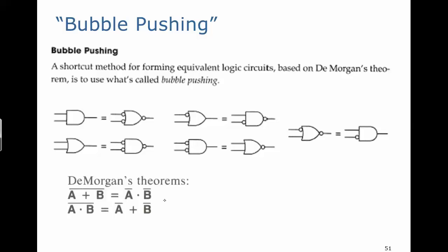What we're going to do is focus your attention down here to the two forms of DeMorgan's theorems, and let's draw the circuit on the left. We have the inverse of the sum, so that is an OR gate with a bubble at the output.